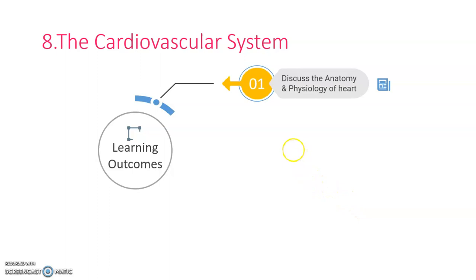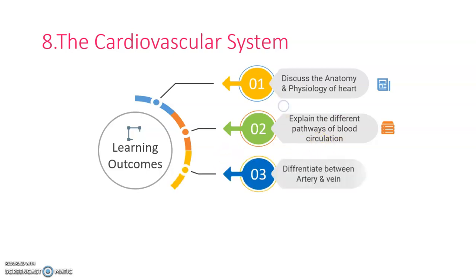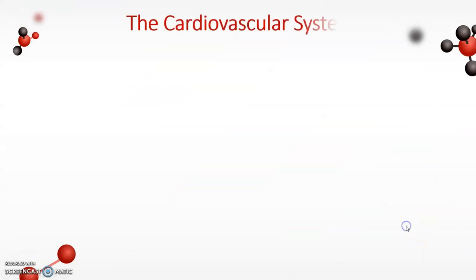Let us discuss the learning objectives or outcomes for today's cardiovascular system topic. Number one: students will be able to discuss the anatomy and physiology of the heart. Number two: explain the different pathways of blood circulation. Number three: differentiate between artery and vein. Number four: identify some disorders related with the cardiovascular system.